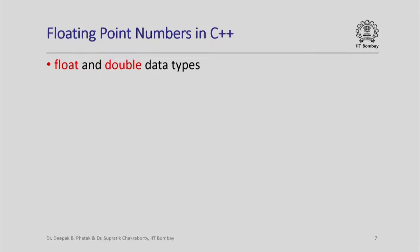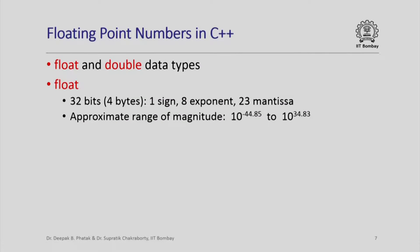In C++, how do we declare floating point variables? There are two data types: float and double. float is 32 bits (4 bytes) for representing a floating point number: 1 bit is reserved for the sign, 8 bits for the exponent, and 23 bits for the mantissa in normalized form. The approximate range of magnitudes representable goes from 10 raised to –44.85 to 10 raised to 34.83. It is an interesting exercise to derive these ranges from the number of bits used for the exponent and mantissa.